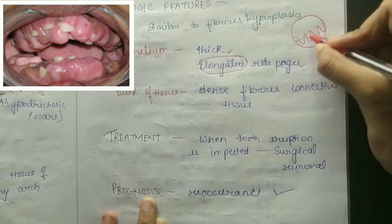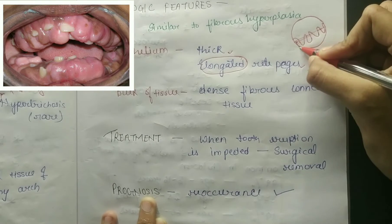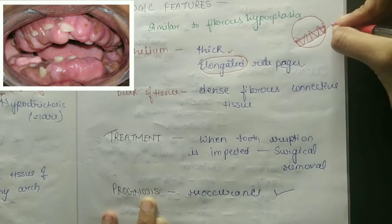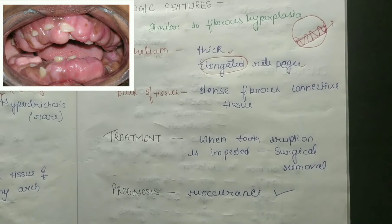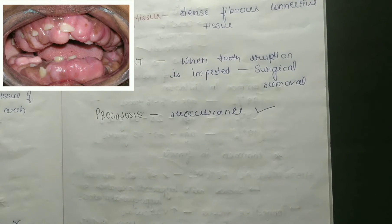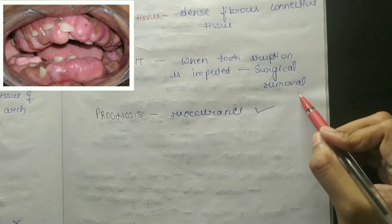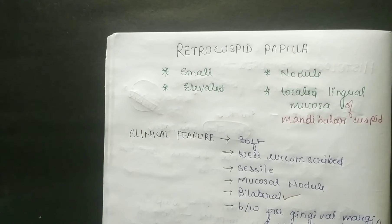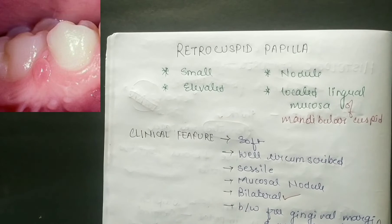Treatment: when tooth eruption is impeded, surgical removal is indicated. Regarding prognosis, recurrence is noted in this condition. The next anomaly under developmental disturbances of gingiva is retrocuspid papilla.